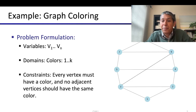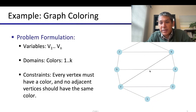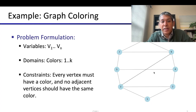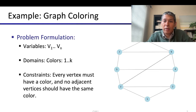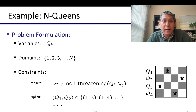Let's take a couple of examples. The easiest one to see is a graph coloring problem. We are given a graph with vertices and edges. The variables are v1 through vn, colors are 1 through k, and we have to make sure every vertex receives a color and adjacent vertices do not receive the same color. Graph coloring is also a standard problem within computer science and serves as a very useful example of CSPs.